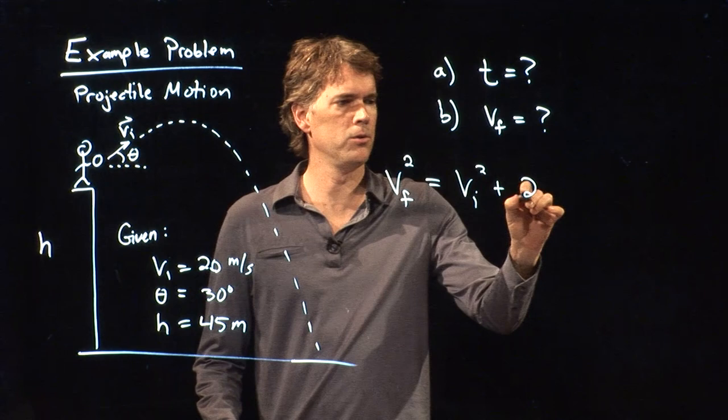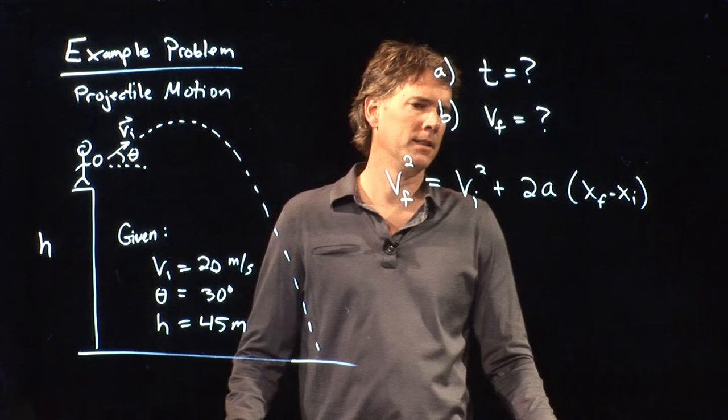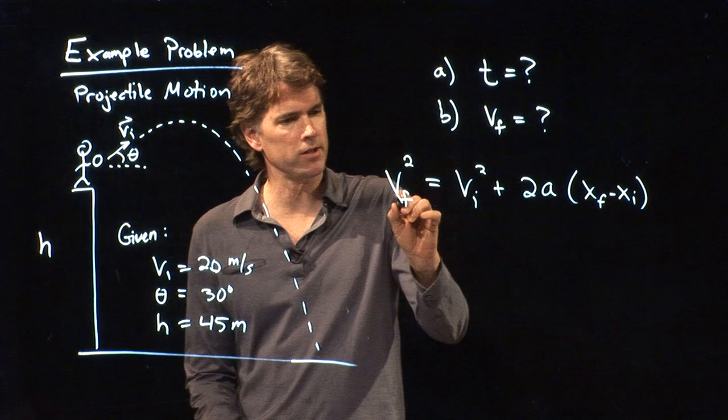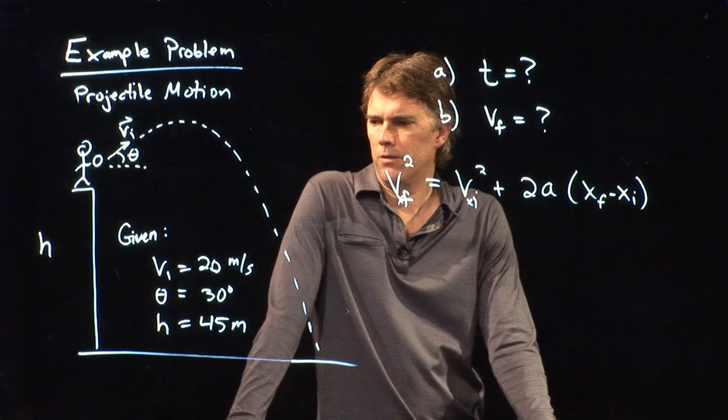We had four kinematic equations. One of those kinematic equations looked like this: Vf squared equals Vi squared plus 2a(xf minus xi). Is that one going to help us? This is really vxf squared and vxi squared.